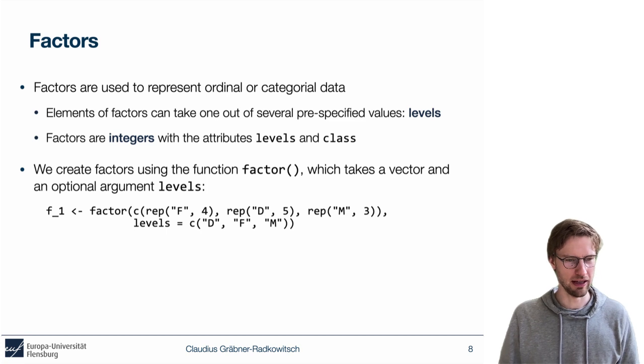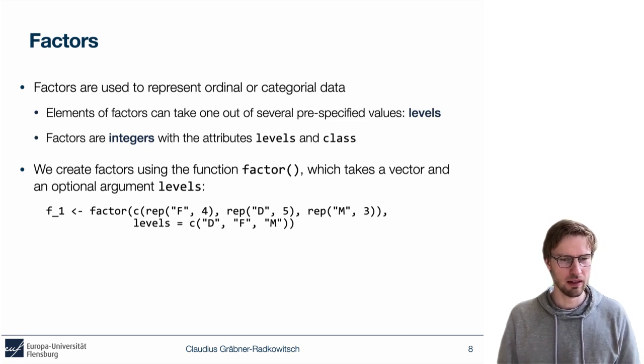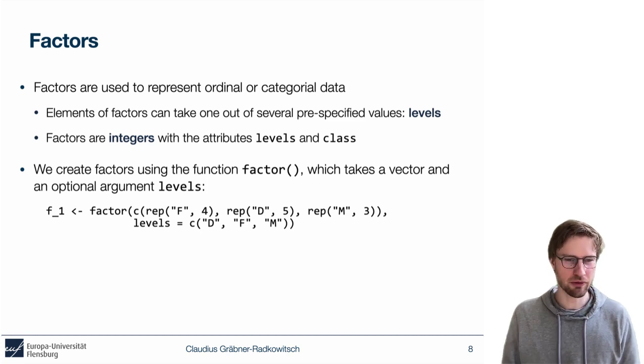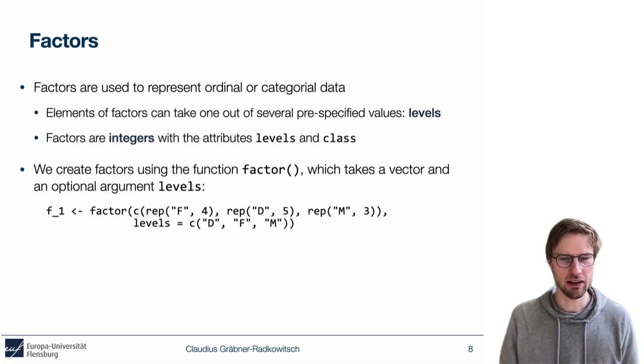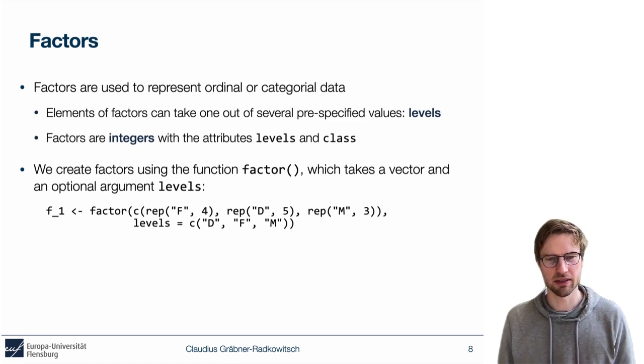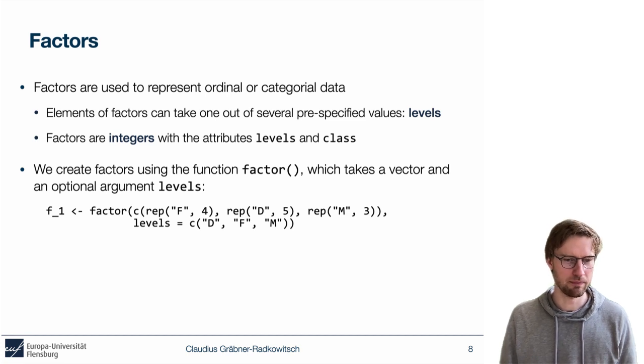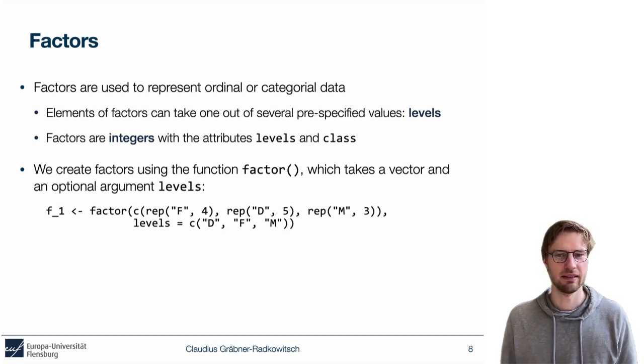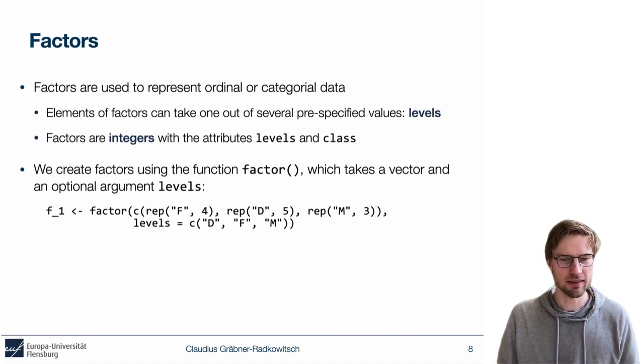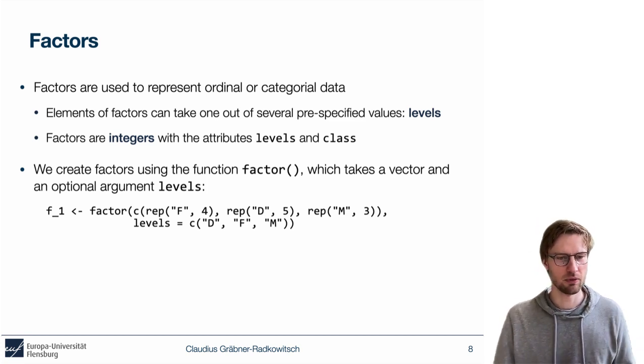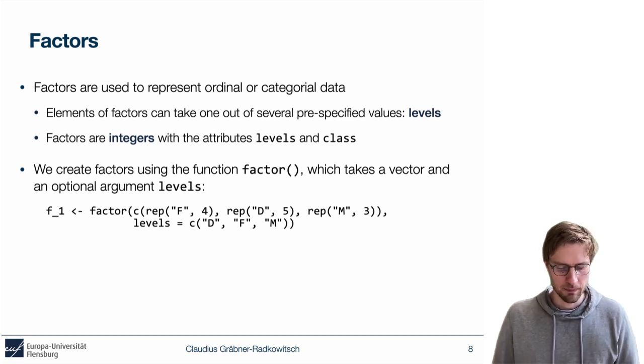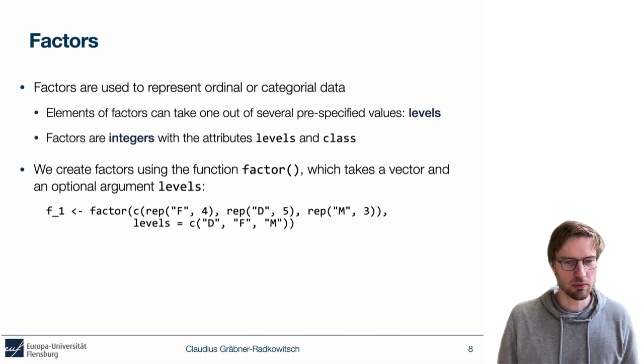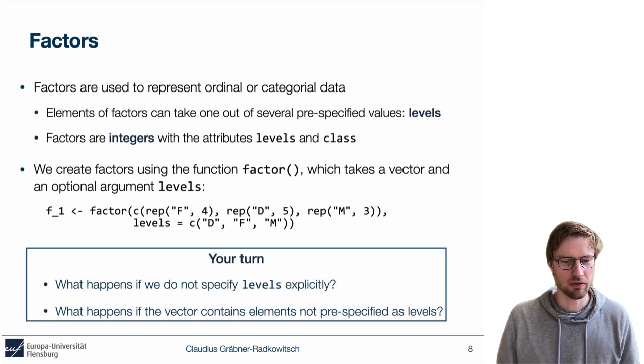Here we define a factor called f underscore one, and we create this factor by first supplying a vector. This vector contains four times the character f, five times the character d, and three times the character m. We also set the argument levels explicitly to d, f, and m. So the result is a factor with three levels and in all 12 elements. Now, I suggest you do that on your computer as well and answer the following two questions.